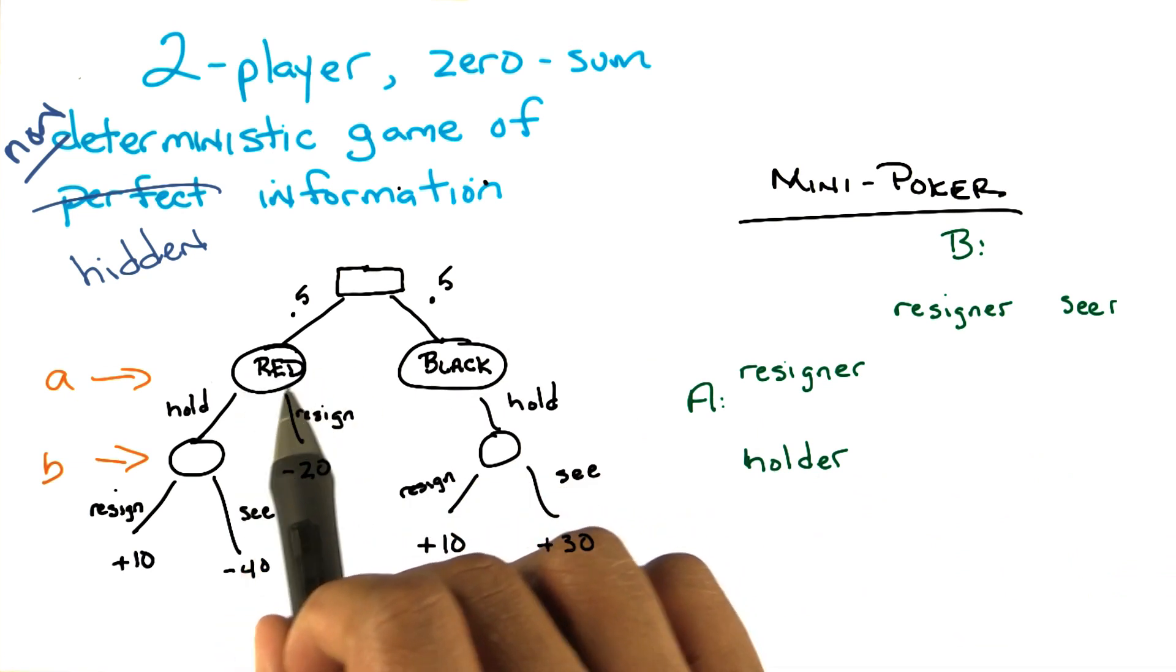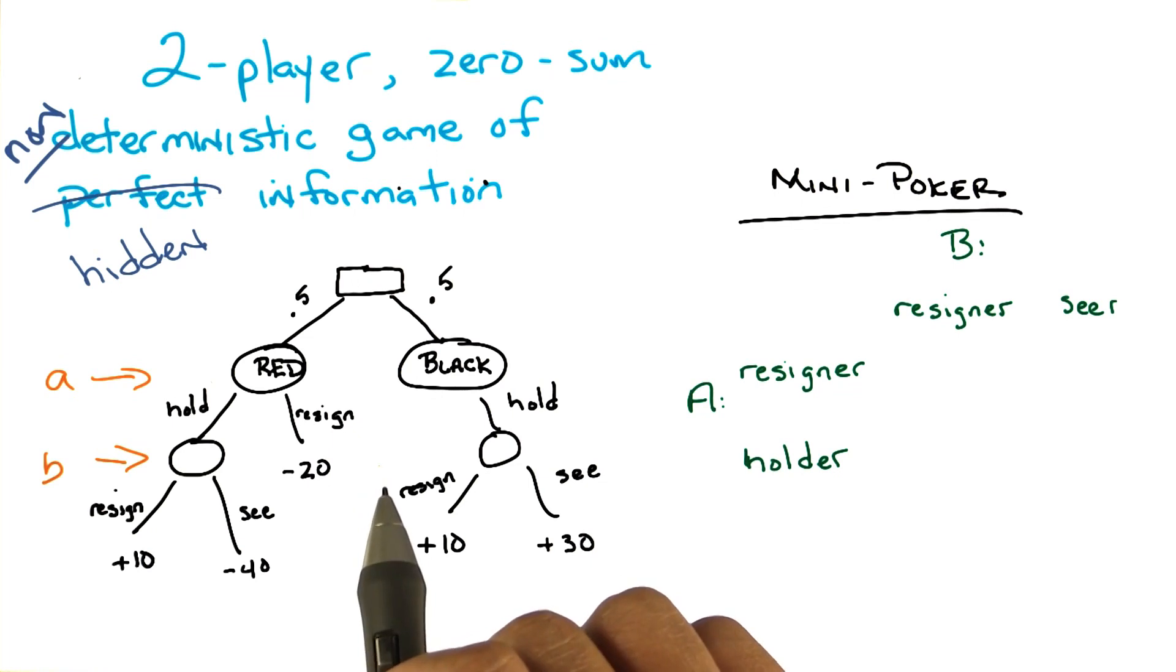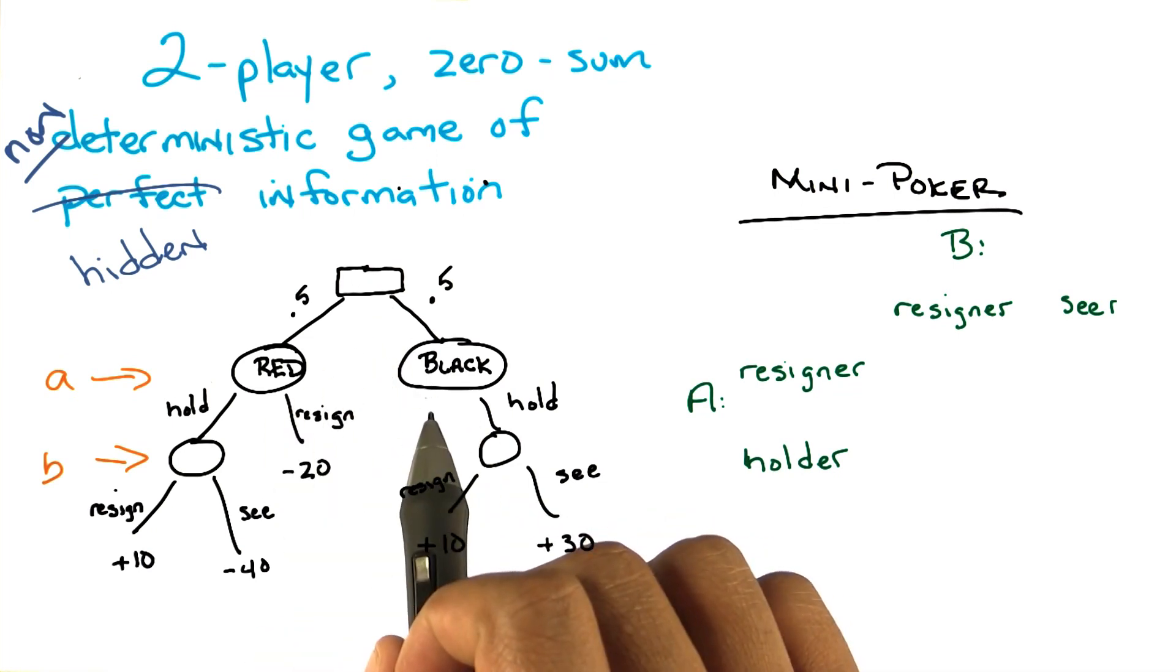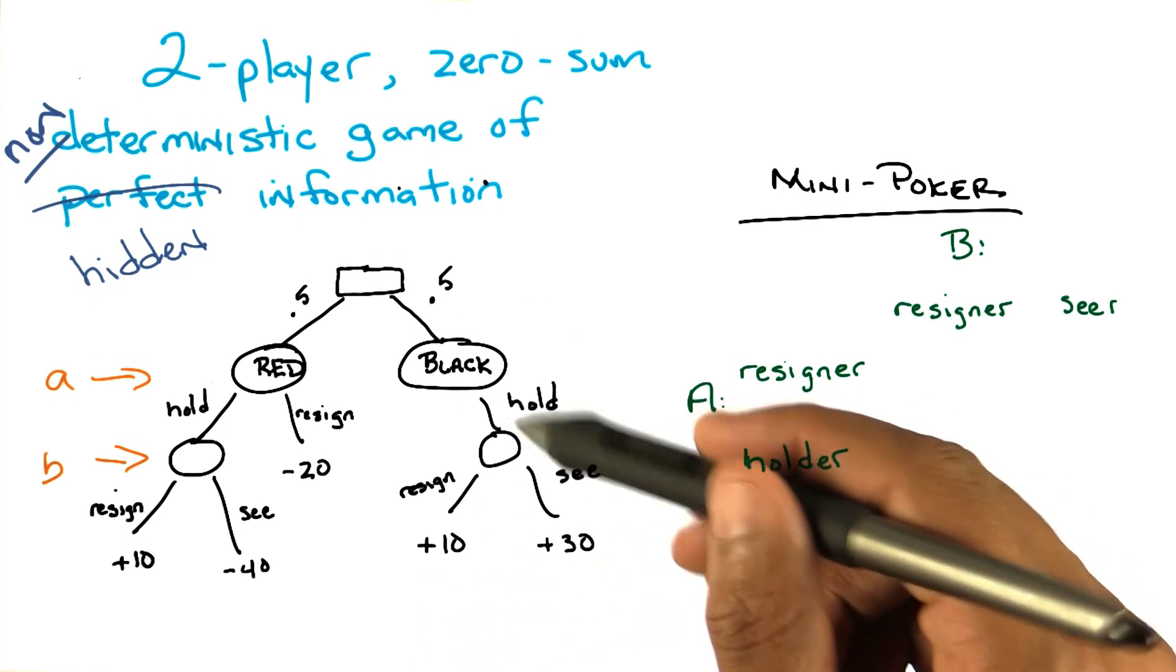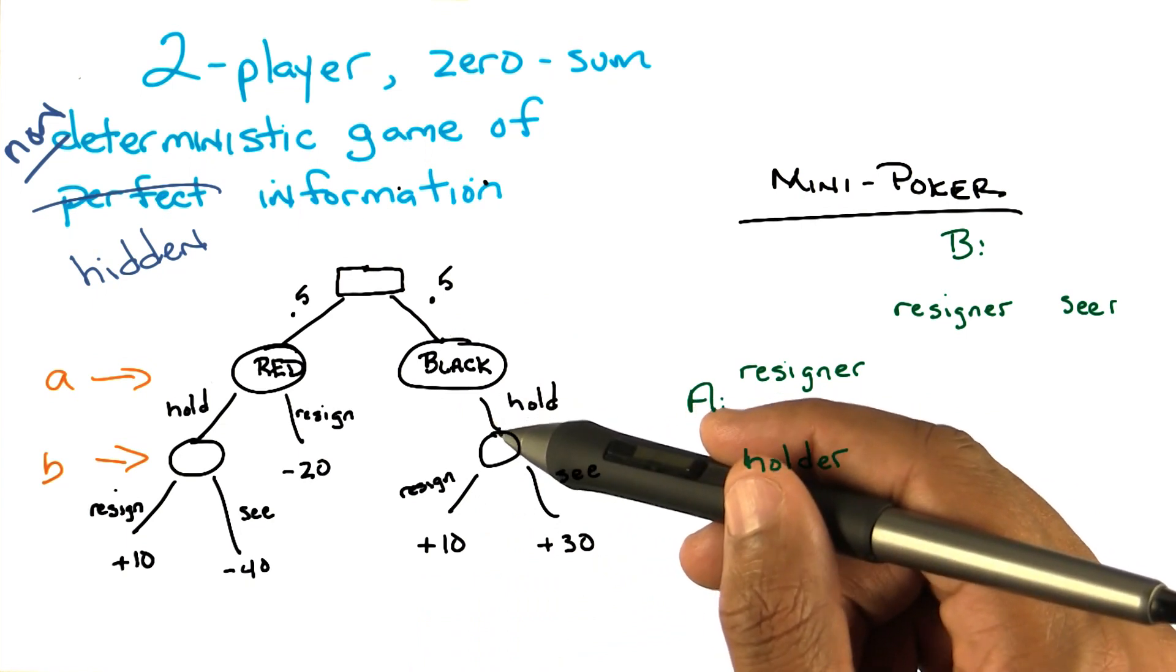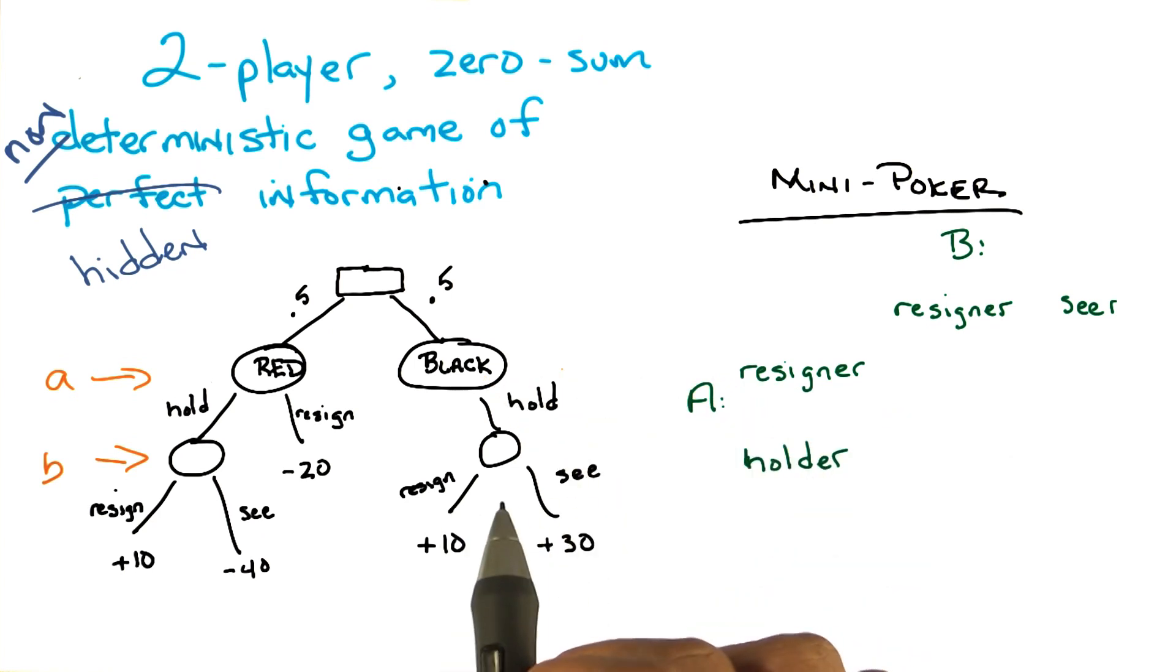So A is going to be either in a red state or a black state. Only A knows this. B does not know this, does not know which state he is in. And so let's say A is in a black state. Well A can only hold in that case, in part because it makes no sense to resign. And then B gets to decide whether to resign, and therefore A gets 10 cents, or to see, in which case A gets 30 cents.